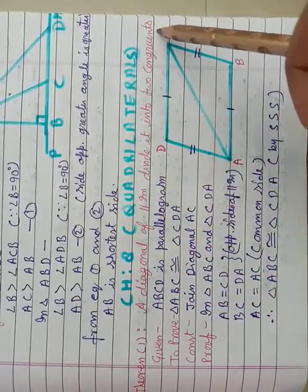Now Chapter number 8, Quadrilaterals. One theorem is there: A diagonal of a parallelogram divides it into two congruent triangles. So how we will prove this?